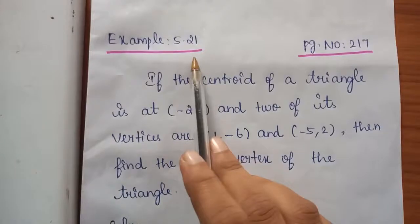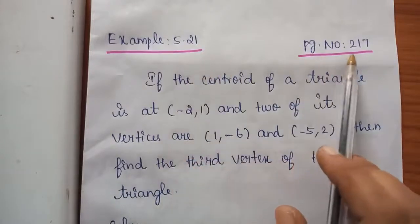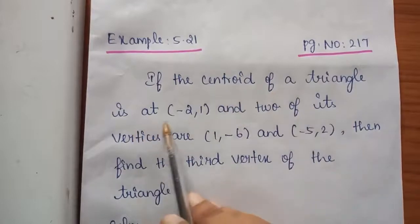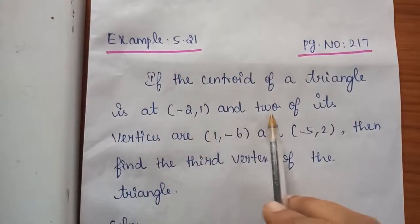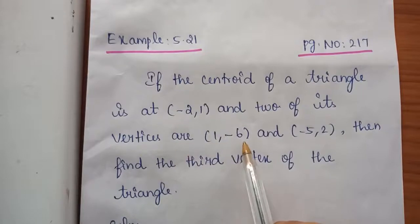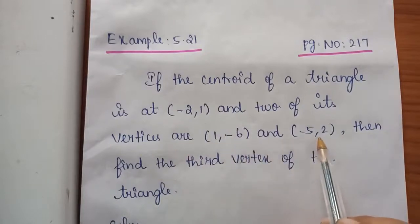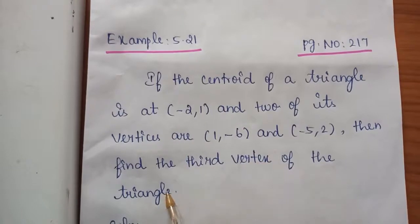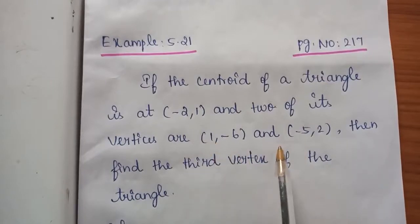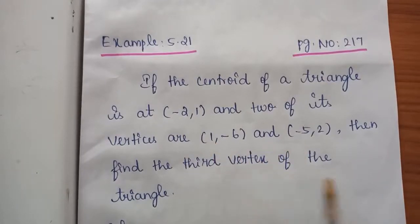Example 5.21, page number 217: If the centroid of a triangle is (-2, 1) and 2 of its vertices are (1, -6) and (-5, 2), then find the third vertex of the triangle. The centroid and two vertices are given; we have to find the third vertex.